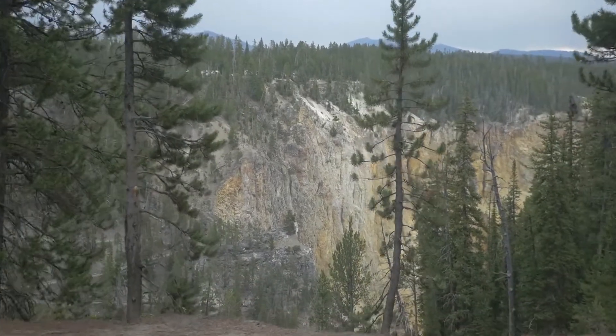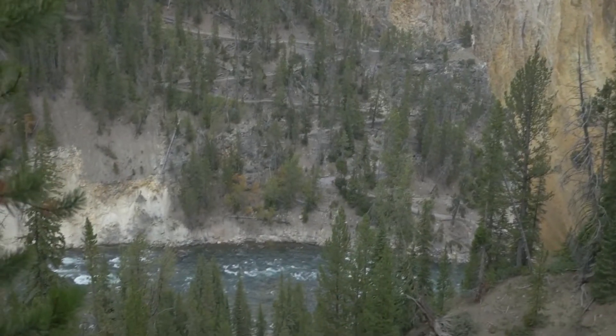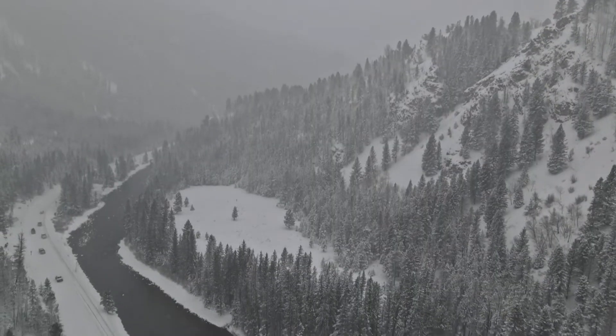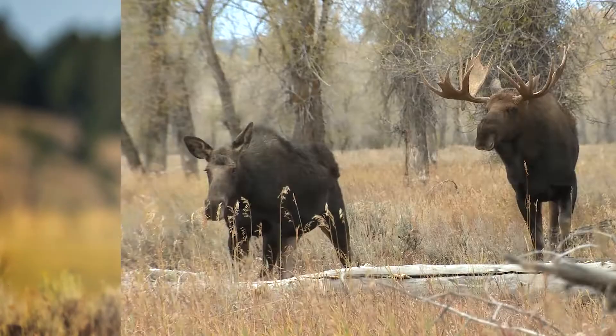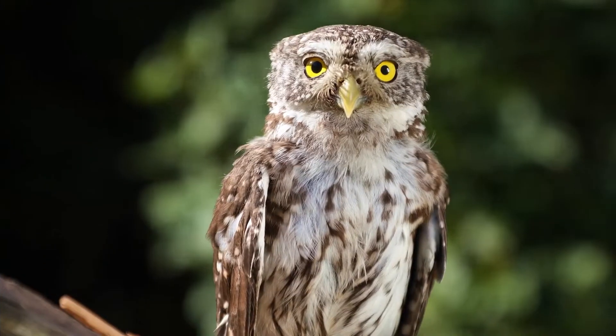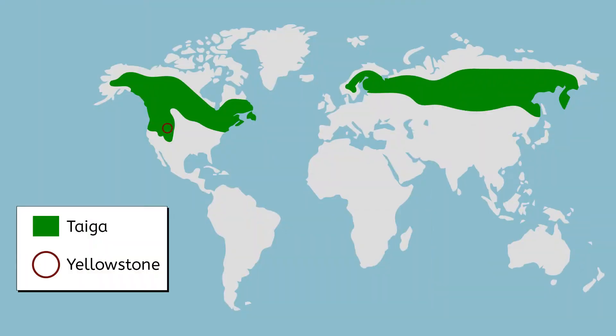Yellowstone's biome is known as the taiga. This means it primarily has forests of evergreen trees and long cold winters. It is home to many different kinds of animals, including beavers, elk, moose, wolves, and owls, just to name a few. The taiga tends to be found in areas far to the north, but not far enough north to be considered arctic. We'll study more of the taiga and other biomes in our ecology unit next semester, but for now I have a really fascinating story to tell you about some of the taiga animals in Yellowstone.